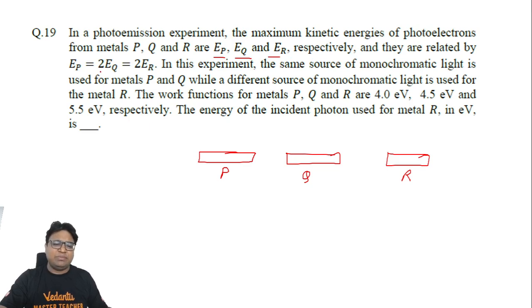And they are related by EP equals 2EQ equals 2ER. So if I assume ER to be equal to K naught, then EQ also becomes equals to K naught and EP becomes equals to 2K naught. So these are the kinetic energies in terms of K naught, a variable that I assume from my side.